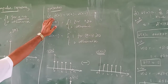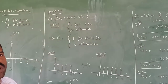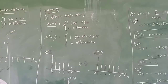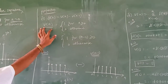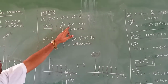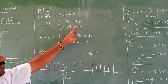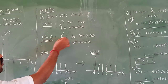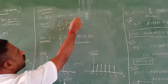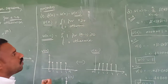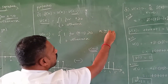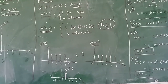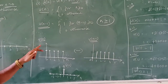Next, the first property: del of n equals u of n minus u of n minus 1. How is u of n minus u of n minus 1 equal to del of n? We are going to see that now. u of n minus 1 equals 1 for n minus 1 greater than or equal to 0, meaning n should be greater than or equal to 1. So for n equal to 1 or greater, we are getting the unit step signal. We can represent these two in a graphical manner.